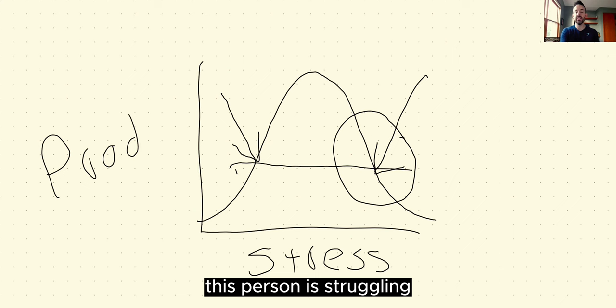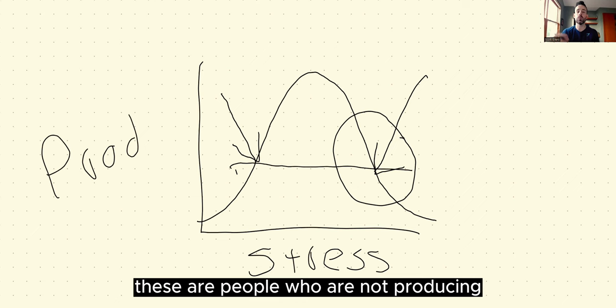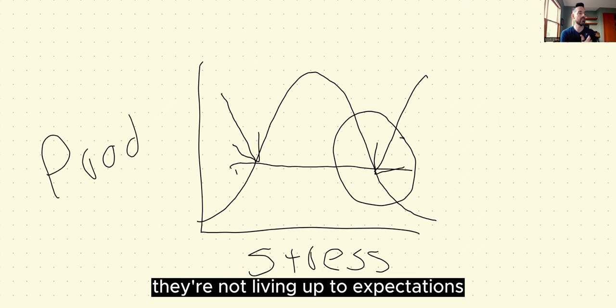Let's say this is grades or work performance. This person is struggling, whether they're on the arrow on the left here or the arrow on the right. These are people who are not producing the way they want to, the way they're capable of, the way other people expect them to. They're not living up to expectations. But they are struggling for two completely different reasons.